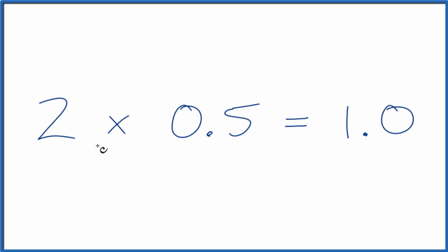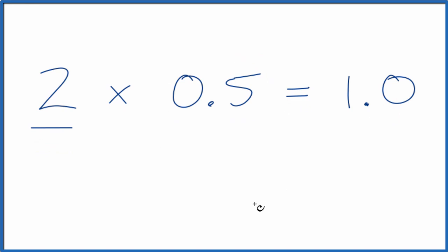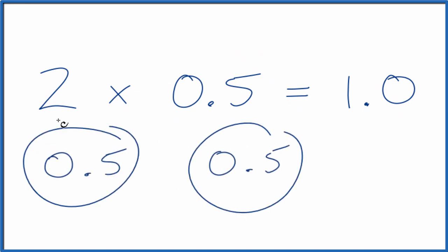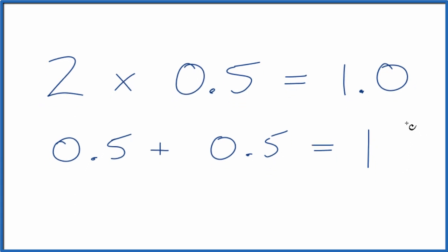Another way to think about that is we have 2 of these 0.5. So we could say we have 1, 2, 2 of these 0.5, so we could just add them together. 0.5 plus 0.5, that just equals 1 or you could call it 1.0. So that's another way to think about it. We get the same answer.